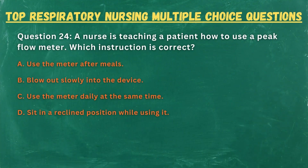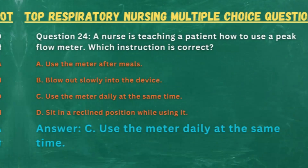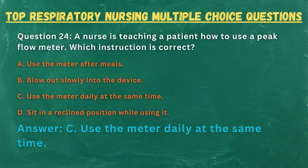Question 24. A nurse is teaching a patient how to use a peak flow meter. Which instruction is correct? A. Use the meter after meals. B. Blow out slowly into the device. C. Use the meter daily at the same time. D. Sit in a reclined position while using it. Answer: C. Use the meter daily at the same time.